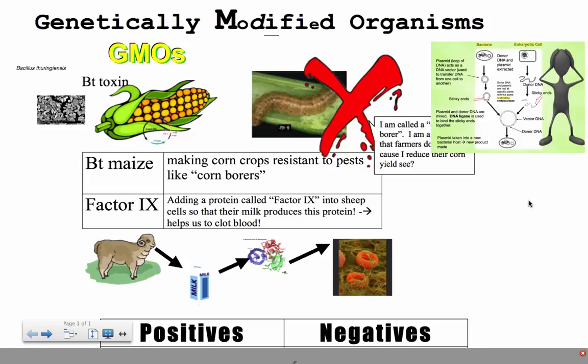Here we're going to take a look at genetically modified organisms, or GMOs. If you type GMOs into Google, you'll get all kinds of examples of genetically modified organisms.